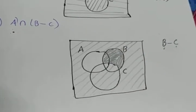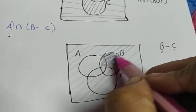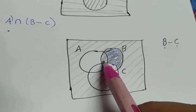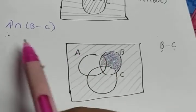This much part in the sense I will do it with a pen. This part is there. This is not there because that is inside A. Though it is B minus C. This is not there as it is intersection.